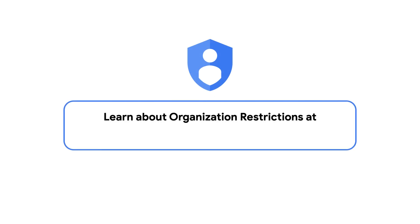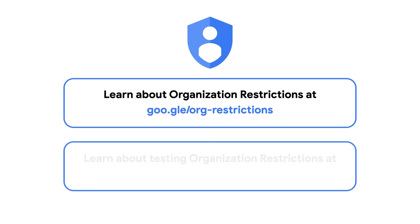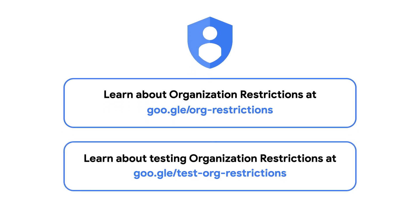To get started with this feature, visit our documentation linked in the description. There, you can learn more about egress proxy prerequisite requirements, additional configuration options, and Google Cloud services which support organization restrictions enforcement. Need to test this before you have your egress proxy set up? Check out our test guide, also linked in the description. Thanks for watching and learning how to better protect your company data from exfiltration with Organization Restrictions.